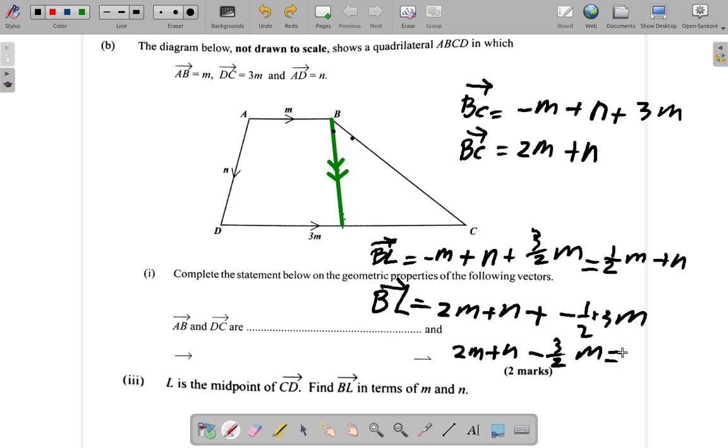So 2 minus 1 and a half, 2 minus 1.5 leaves 0.5, so it's positive half M plus N. What we have here is the same as here.